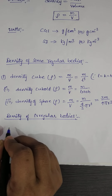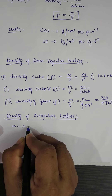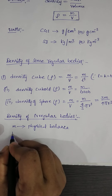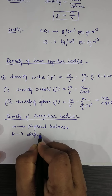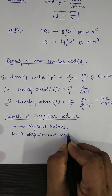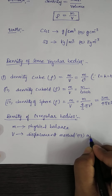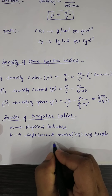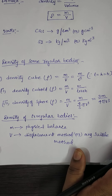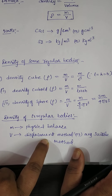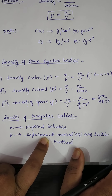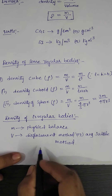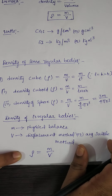To find the density of irregular bodies, we first find mass — mass of the irregular body can be found using a physical balance. To find volume, we use the displacement method or any suitable method. By using the physical balance for mass and the displacement method for volume, we can easily find density using the formula: density equals mass upon volume.